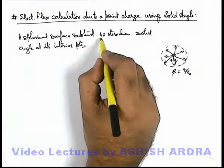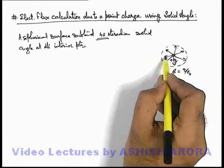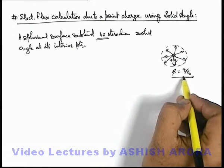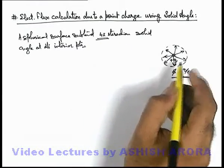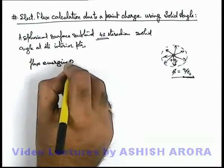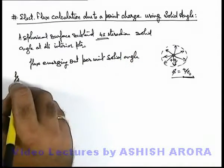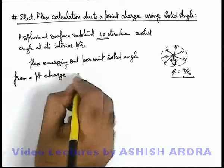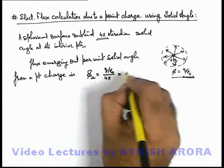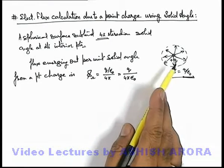Here we can see that if at every interior point a spherical surface obtains a solid angle of 4π steradians, then when a charge originates its flux q by epsilon not uniformly in all directions, this q by epsilon not is distributed over 4π solid angle uniformly. So flux emerging out per unit solid angle from a point charge — written as φ_ω — equals q by epsilon not upon 4π, or q upon 4π epsilon not.